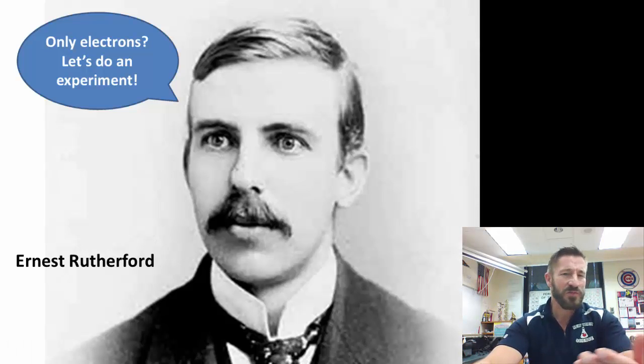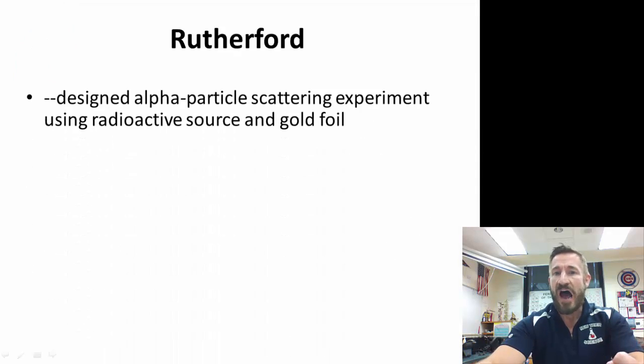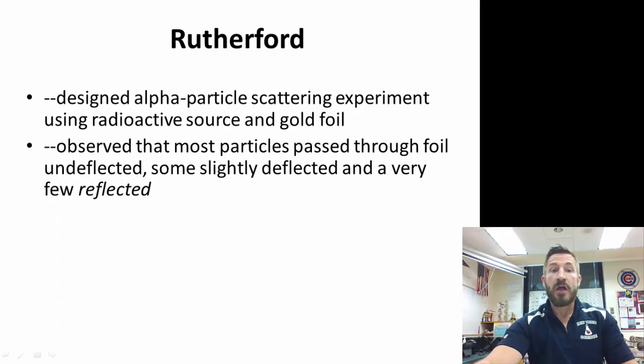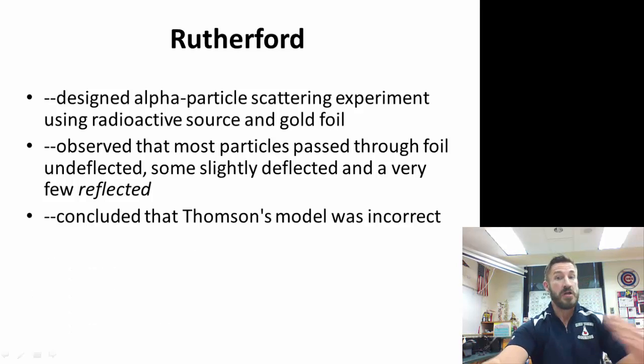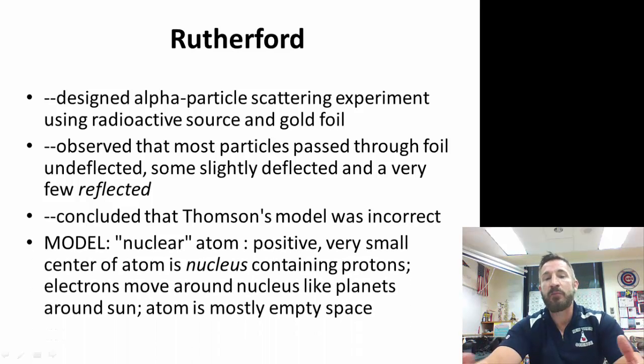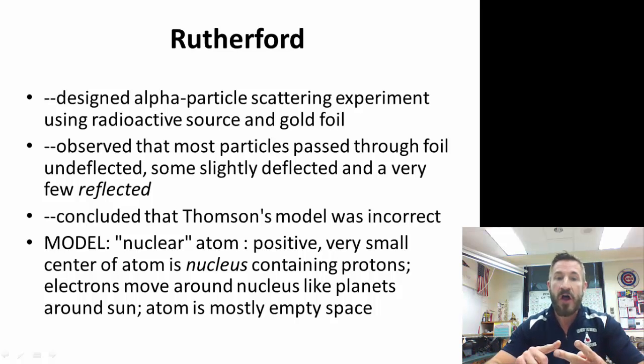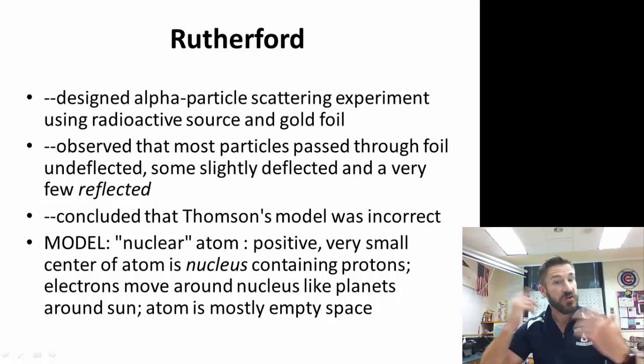Next, Ernest Rutherford said, only electrons? I think there's more. Let's do some experiments. Rutherford designed an alpha particle scattering experiment that used a radioactive source and he shot that through gold foil. What he observed is that most particles pass directly through the foil undeflected. But every once in a while there were some that were deflected, and a few were reflected. He said he could have almost been knocked over because he was so surprised when he saw this happen. This means there's something else going on, that this plum pudding model is not the most accurate. He concluded Thompson's model was incorrect. The model he came up with was a nuclear atom with a positive, very small, very dense center called the nucleus containing protons. Those electrons move around the nucleus like planets move around the sun. Most of the atom is actually empty space.